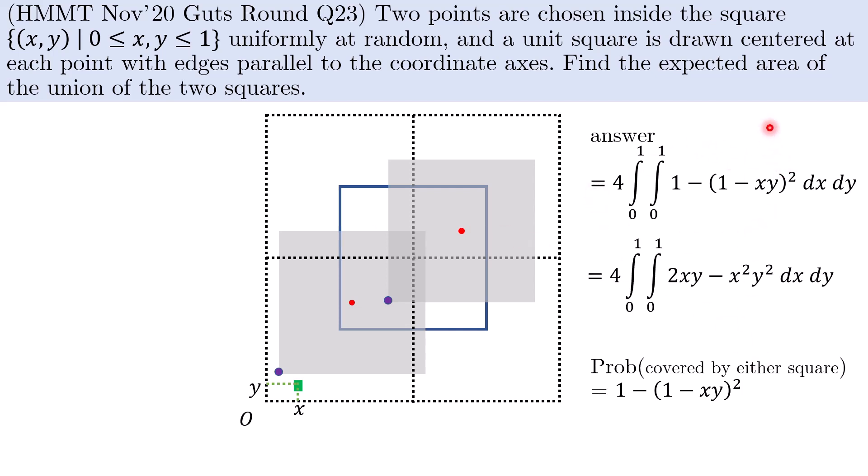We now expand the quantity to get this double integral here. Following which we first integrate in x to get the expression over here, where x is supposed to be substituted in with values 0 and 1. So we substitute in to get the single integral left. And now we perform the single integral to get the final answer of 14 over 9.